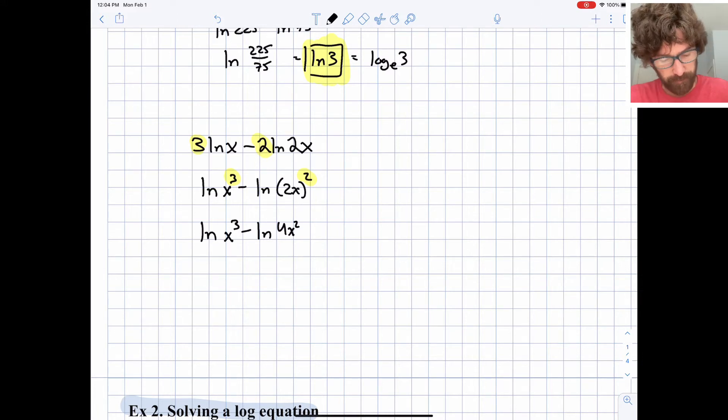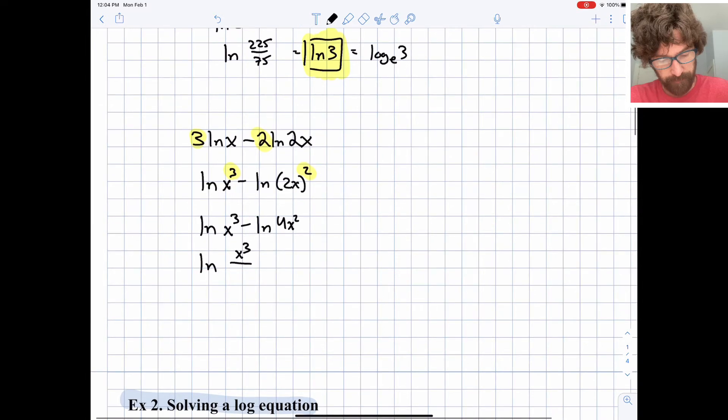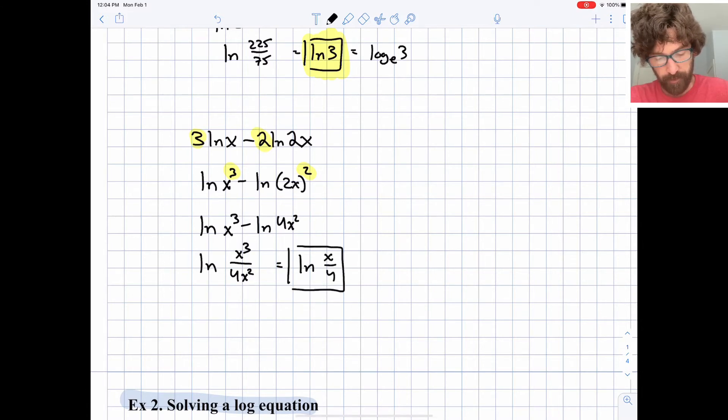And now we can apply our quotient rule again. So we get the natural log of a single expression, x cubed over 4x squared, which can be simplified to be the natural log of x over 4. That would be the simplified final answer to that problem.